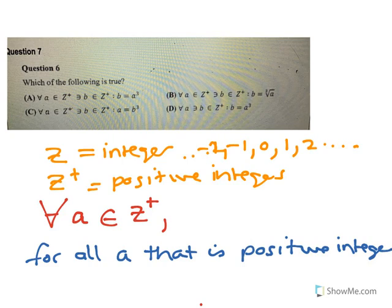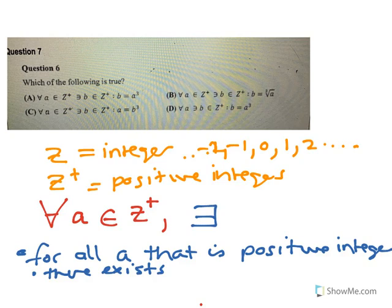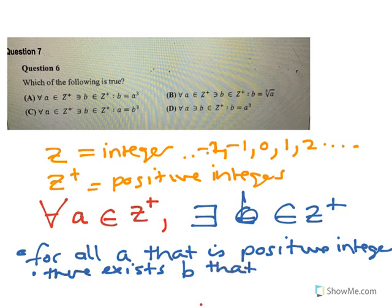So for all positive integers a, then it says there exists. So there exists, and then because it says an element, there exists a b which is an element of Z plus. So basically there exists a b that is a positive integer.